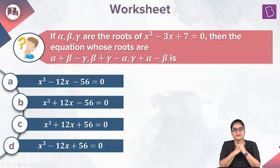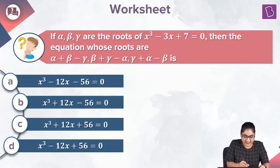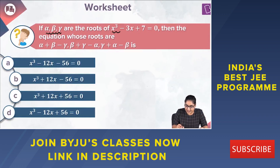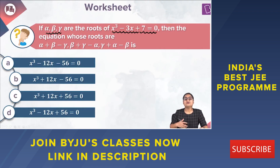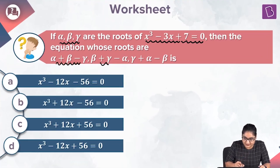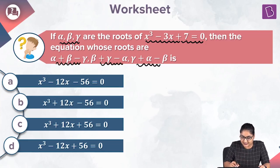In this question, we have been given that alpha, beta, gamma are the roots of the equation x cube minus 3x plus 7 equal to 0. We have to frame an equation whose roots are given by alpha plus beta minus gamma, beta plus gamma minus alpha, and gamma plus alpha minus beta.